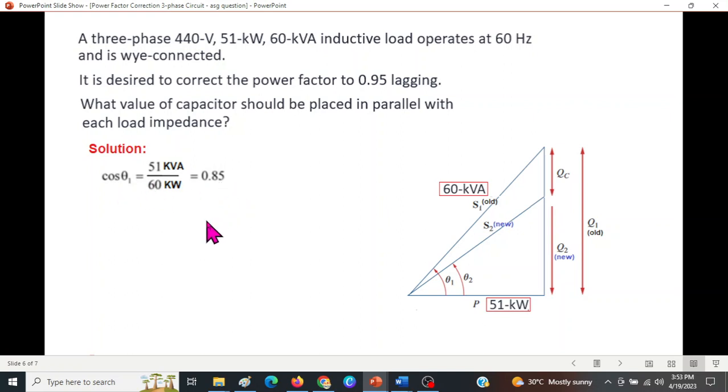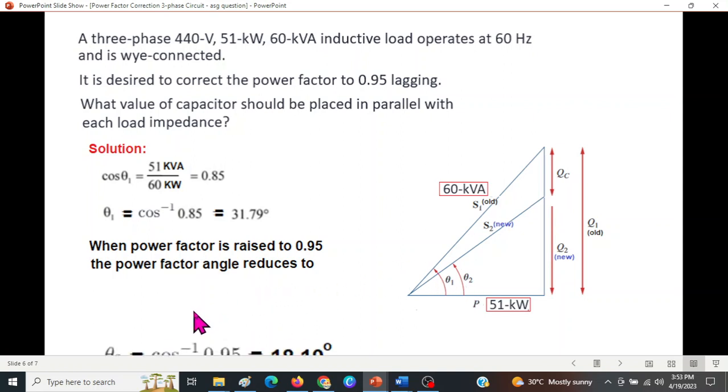So this is the power factor. Now from here you can find the angle θ is cos⁻¹ of 0.85, that is 31.7°. This angle is 31.7°. And now when we have corrected the power factor, that is we have increased the power factor to 95 percent, then this angle will reduce. It has come down to θ₂. And θ₂ can be refined from cos⁻¹ of 0.95, that is 18.19°. Initially it was 31° and now it has reduced to 18.19°.